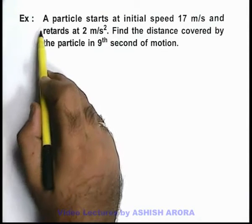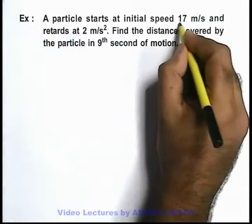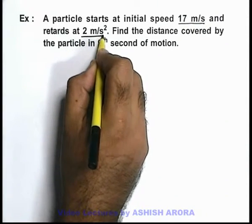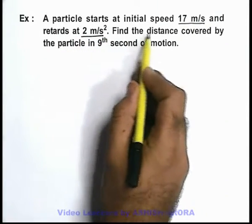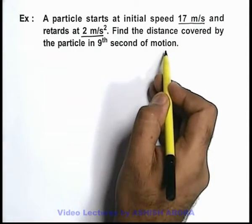In this example, a particle starts at initial speed of 17 meters per second and retards at 2 meters per second squared. We are required to find the distance covered by the particle in the ninth second of motion.